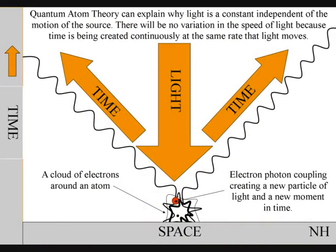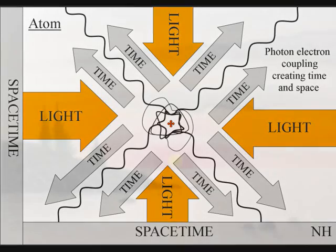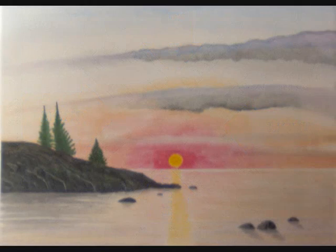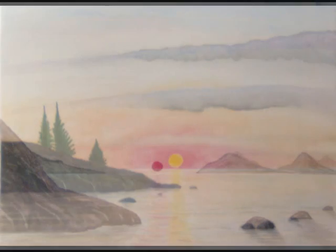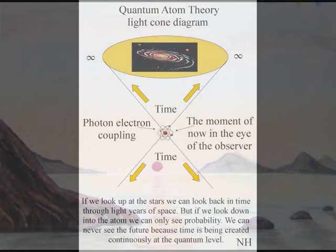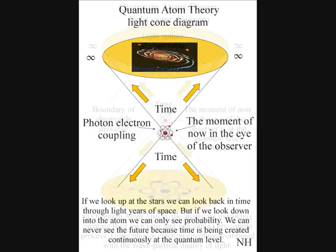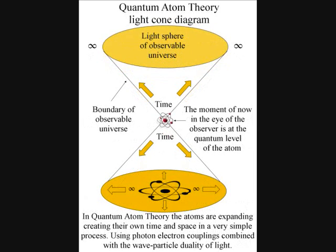Because this is a continuous process at the same speed that light moves, the expanding wave function of light between the atoms will always be a universal constant independent of the motion of the source. Therefore if we look up at the stars we can look back in time through light years of space. But if we look down into the atom we can only see probability.